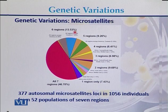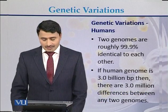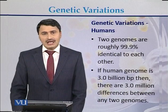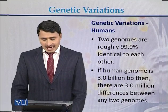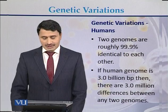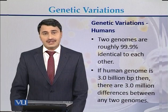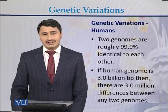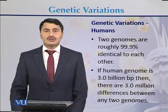Including all the data, it was observed that the variation of these autosomal microsatellite markers was 46 percent. In terms of genetic variation in humans, two genomes are roughly 99.9 percent similar. If a human genome is 3 billion base pairs, that means there are approximately 3 million differences between any two genomes — a difference of only 0.1 percent.